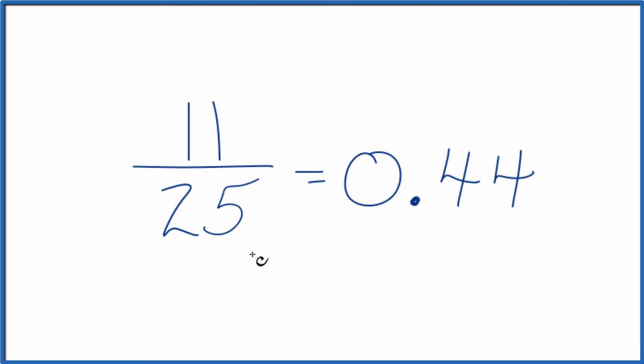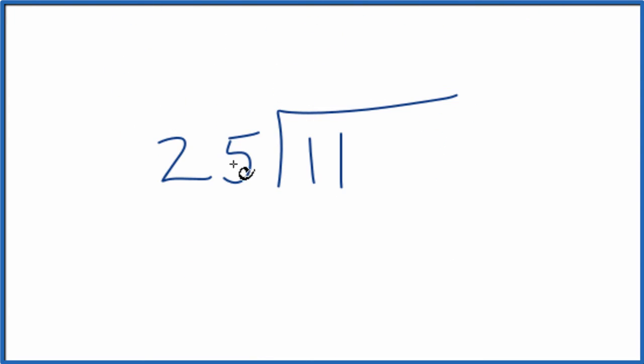The other way is we can divide 11 by 25. So we take 11 and see how many times 25 goes into 11. 25 doesn't go into 11, so we can make this 110, but then we have to put 0 point here.